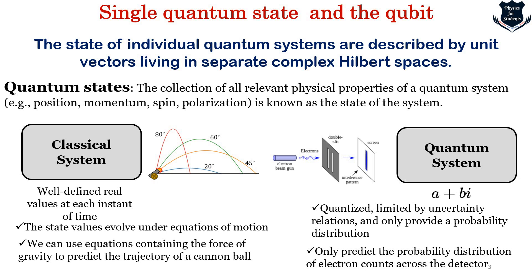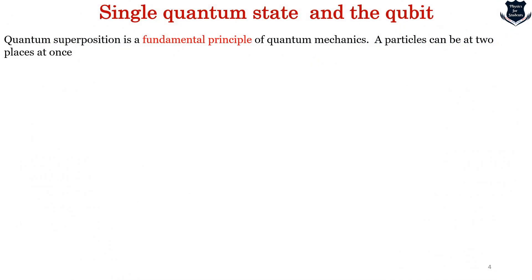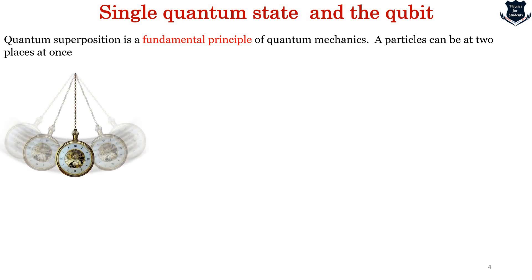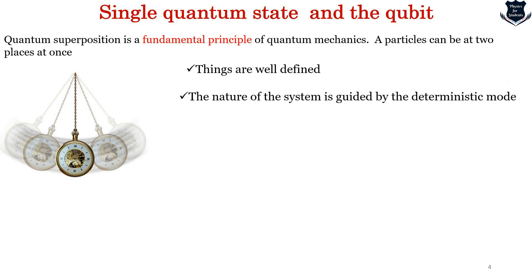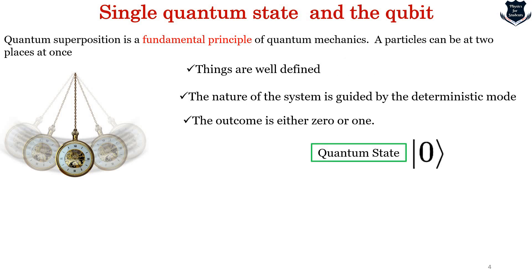Quantum superposition is a fundamental principle of quantum mechanics, which means that a particle can be at two places at once. In contrast, classical mechanics is well defined — the nature is guided by the deterministic mode and the outcome is either 0 or 1, which is not the case for a quantum state. This is typically the bra and ket notation of quantum state. If you are curious about how bra and ket work, you can go to my playlist on quantum mechanics, divided into basic, medium, and advanced levels.